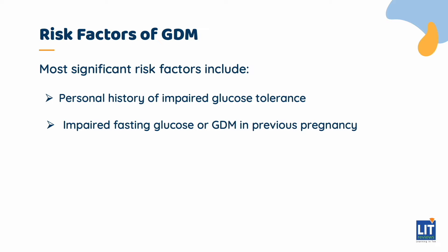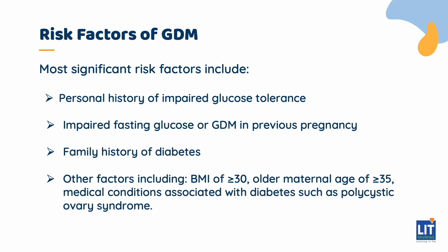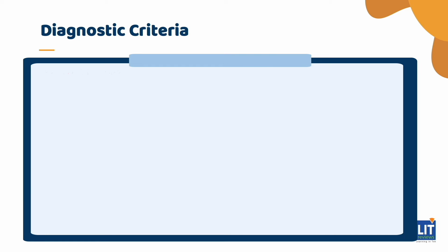Other risk factors include family history of diabetes, a BMI of more than 30, older maternal age of more than 35, and medical conditions associated with diabetes, such as polycystic ovary syndrome.